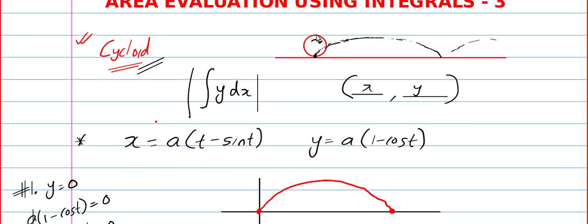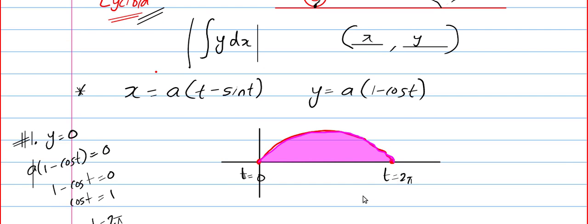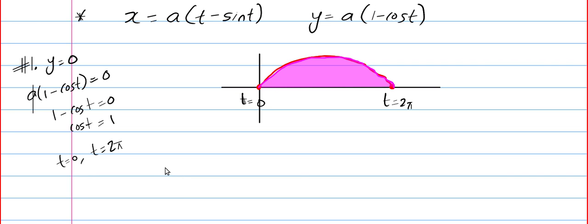When the wheel rolls, the cycloid will be formed. So, this is the required area. I am going to mark the required area for you. I think I will mark with pink. I think you are able to see the required area. So, I am going to mark t equals 0 and t equals 2π. And here I am going to write area equals. We don't have to multiply by 4 or 2 because it is only one arch.